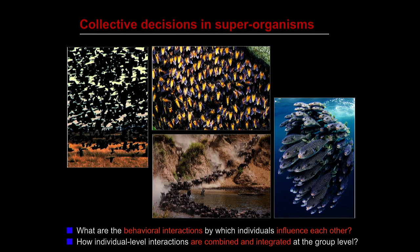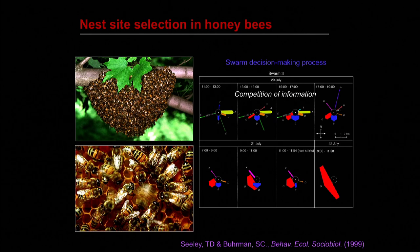Indeed, one of the fundamental questions in this field of collective animal behavior studies is how groups make decisions collectively. This comes down to understanding the mechanisms by which individuals influence each other and how these interactions are combined and integrated at the collective level. Earlier this week, Andrea Giovanni Reina presented a very famous example of collective decision based on direct interactions between individuals during the process of nest site selection in honeybees.